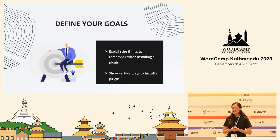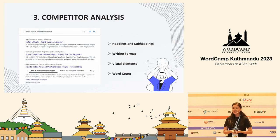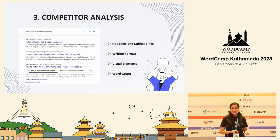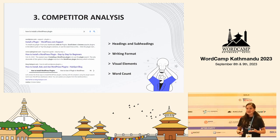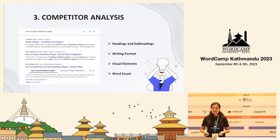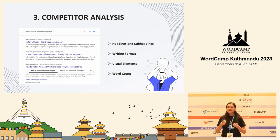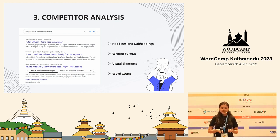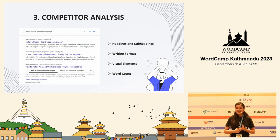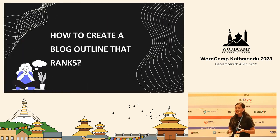After you define your goals, the next step is competitor analysis. You can search for your keywords on search engines, collect the top-ranking articles, analyze them, and generate ideas for your own blog outline. You can go through their headings and subheadings, their writing format, the visuals and elements they are using, and even the word count. Using different tools online, you can figure out the word count of those articles, take an average, and use that to know how long your article should be. With keyword analysis, search intent analysis, and competitor analysis done, you can now start creating your blog outline.